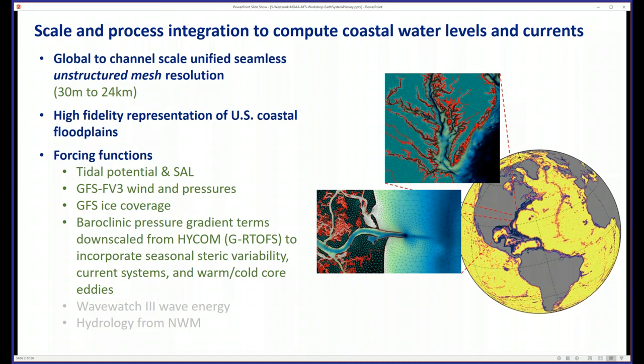The forcing functions that dominate in this coastal region are tides, driven by tidal potential functions. We don't need any boundary functions, and we use something called self-attraction and loading tides. The weather is forced with GFS FV3. We use GFS ice coverage. This is a 2D model, and you can see some of the unstructured finite element discretization on the right.